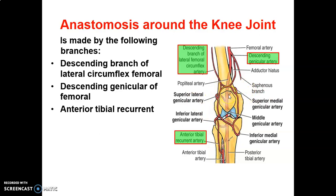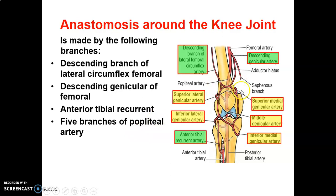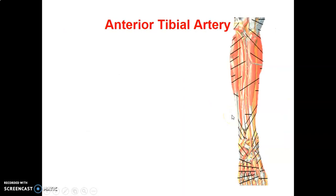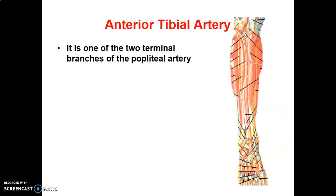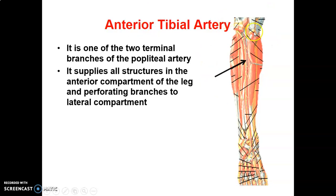The five branches of the popliteal artery also contribute to the genicular anastomosis: the superior medial genicular, superior lateral genicular, inferior medial genicular, inferior lateral genicular, and the middle genicular artery from the popliteal. These are all the branches contributing to the genicular anastomosis.